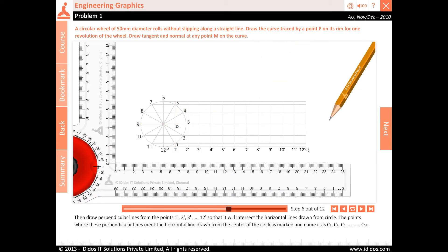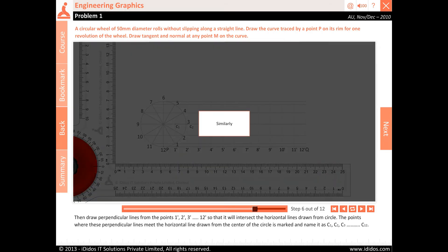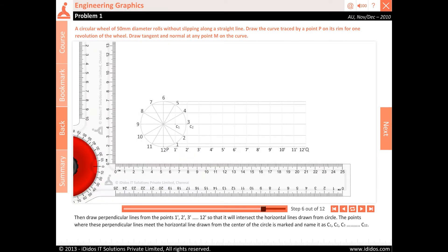The points where these perpendicular lines meet the horizontal line drawn from the center of the circle are marked and named as C1, C2, C3, C4, C5, C6, C7, C8, C9, C10, C11, and C12.